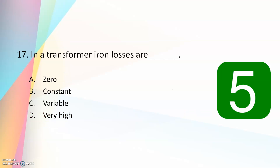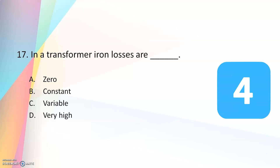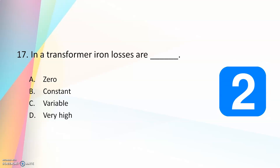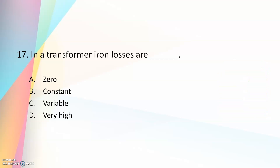Seventeenth question: in a transformer, iron losses are — zero, constant, variable, or very high. The answer is constant. Iron losses of a transformer are constant.